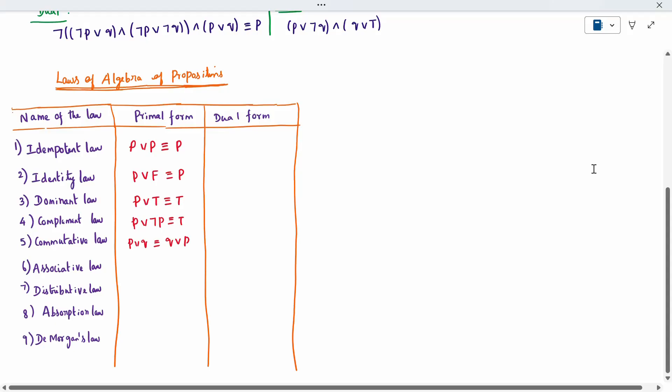Associative, it is three brackets. Change only the symbol of the brackets with respect to three variables. P conjunction (q conjunction r) is equivalent to (p conjunction q) conjunction r. Completed. Only three variables, bracket will change.